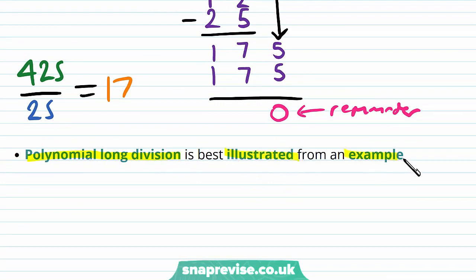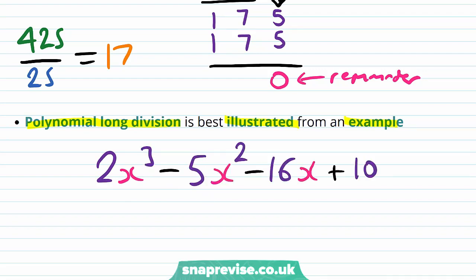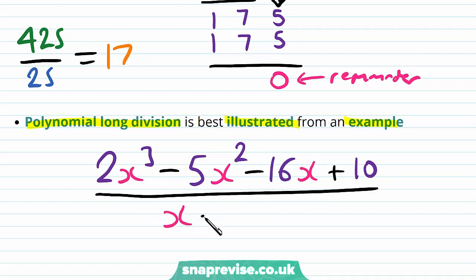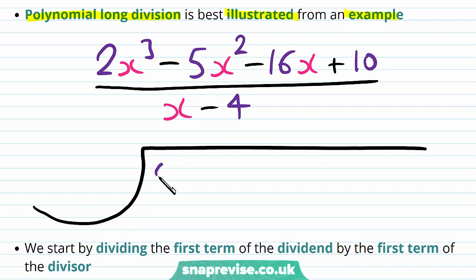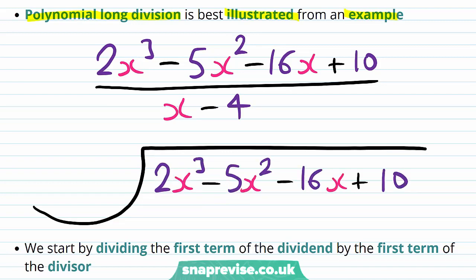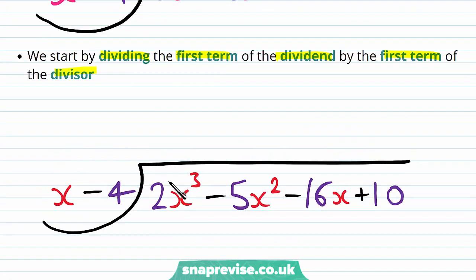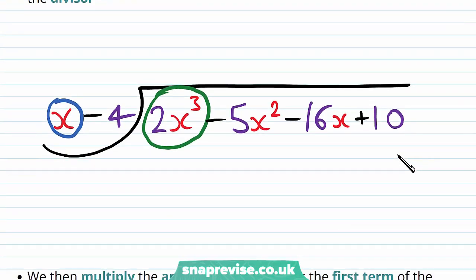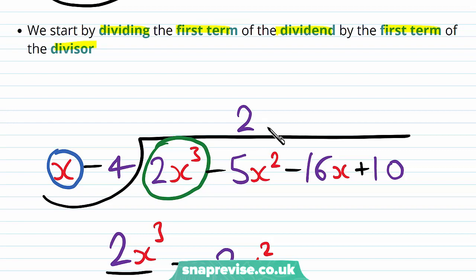Let's say we want to take (2x³ − 5x² − 16x + 10) over (x − 4). Firstly, we start by writing our bus stop and then writing our dividend 2x³ − 5x² − 16x + 10 underneath the bus stop, and then we put our divisor x − 4 over here. We start by dividing the first term of the dividend by the first term of the divisor. So we start with our 2x³, the first term of the dividend, and our x, the first term of the divisor, and we compute 2x³ over x. This gives us 2x², and then we write this up here in line with the x² terms.